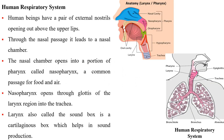In the human respiratory system, human beings have a pair of external nostrils opening above the upper lips. Through the nasal passage, it leads to a nasal chamber, which opens into a portion of the pharynx called the nasopharynx. The nasopharynx, a common passage for food and air, opens through the glottis of the larynx region into the trachea. The larynx, also called the sound box, is a cartilaginous box which helps in sound production.